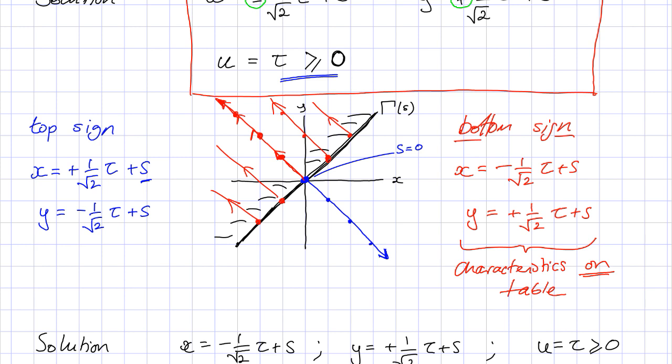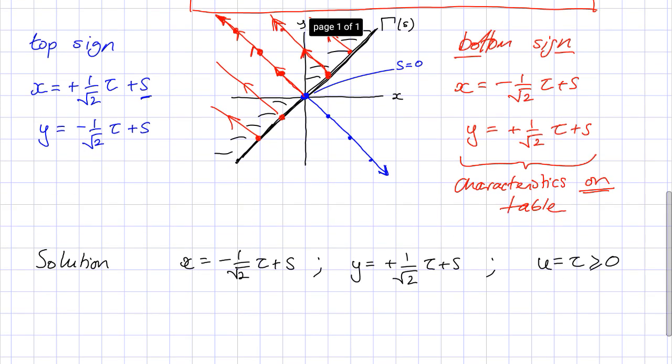So you can sketch these by hand if you just think, I'm going to pick a point on the boundary, try and pick something clever, something simple, and then from there take some values of tau and come along your characteristic curves. Okay, finished.